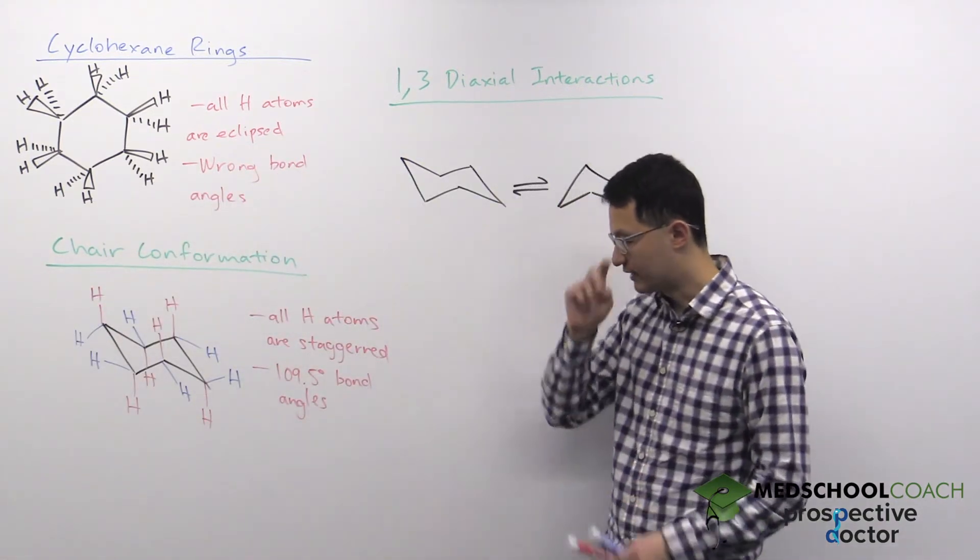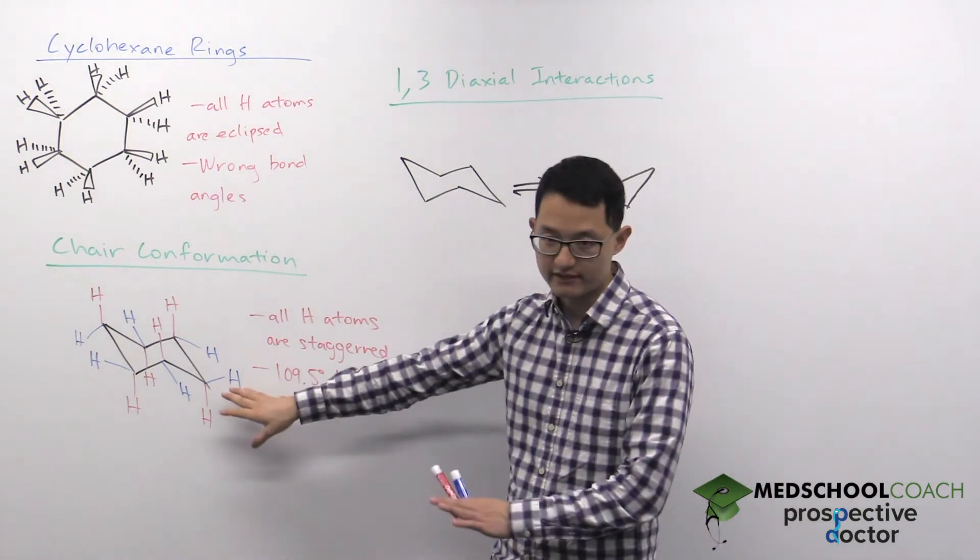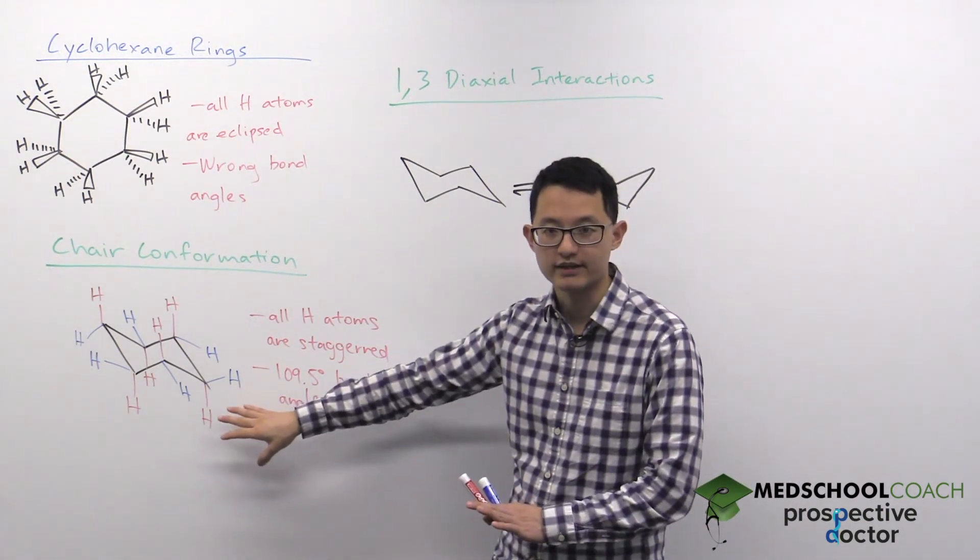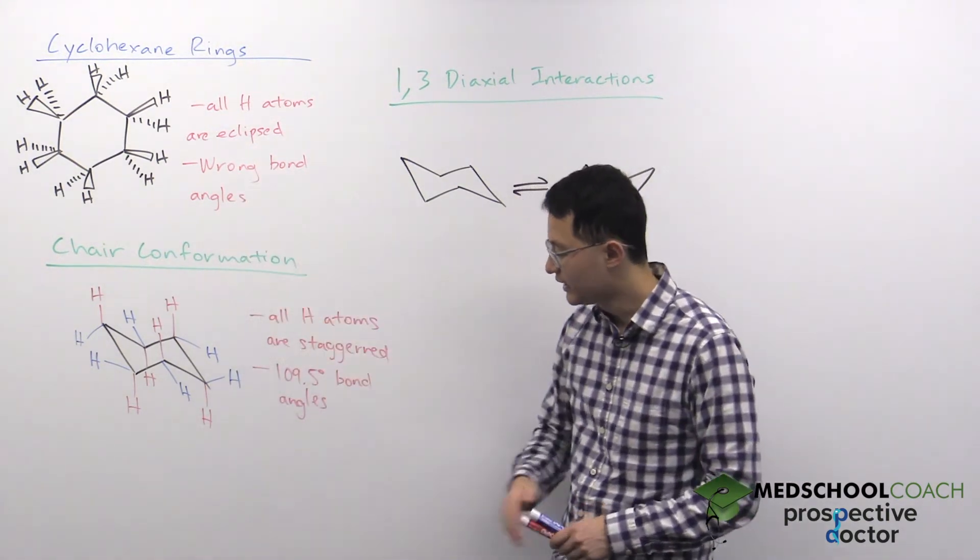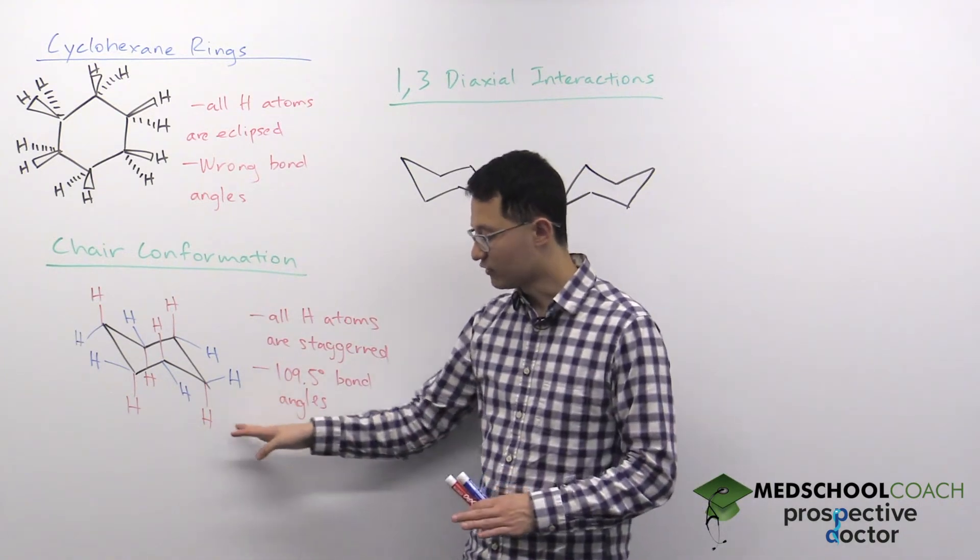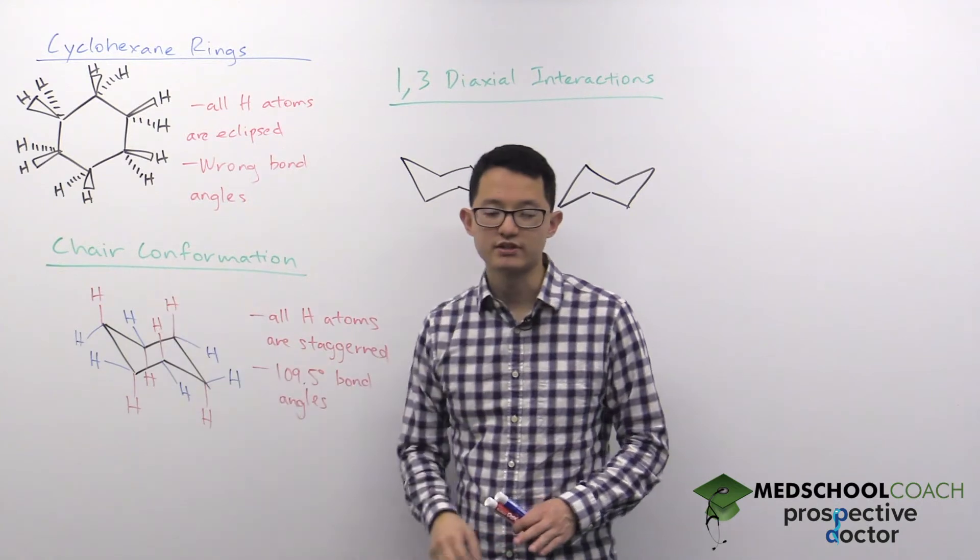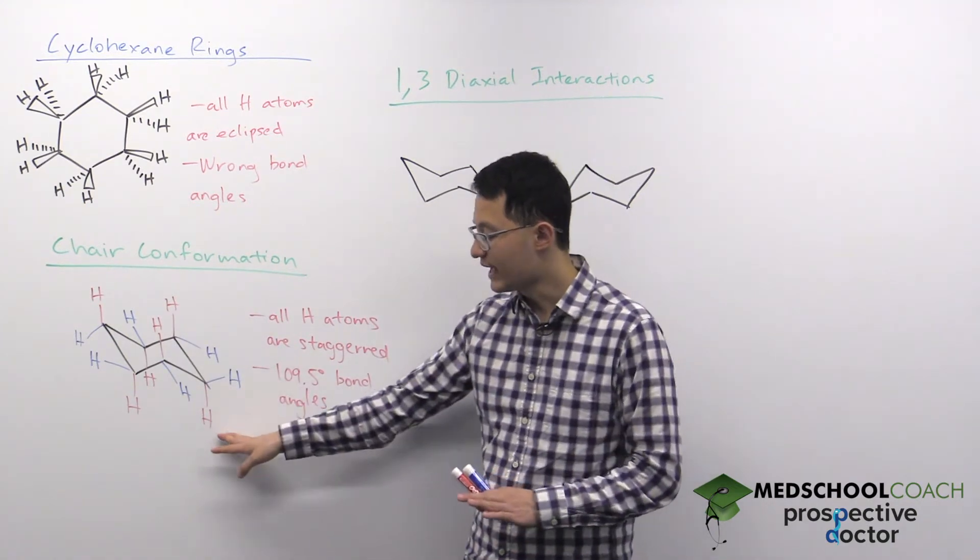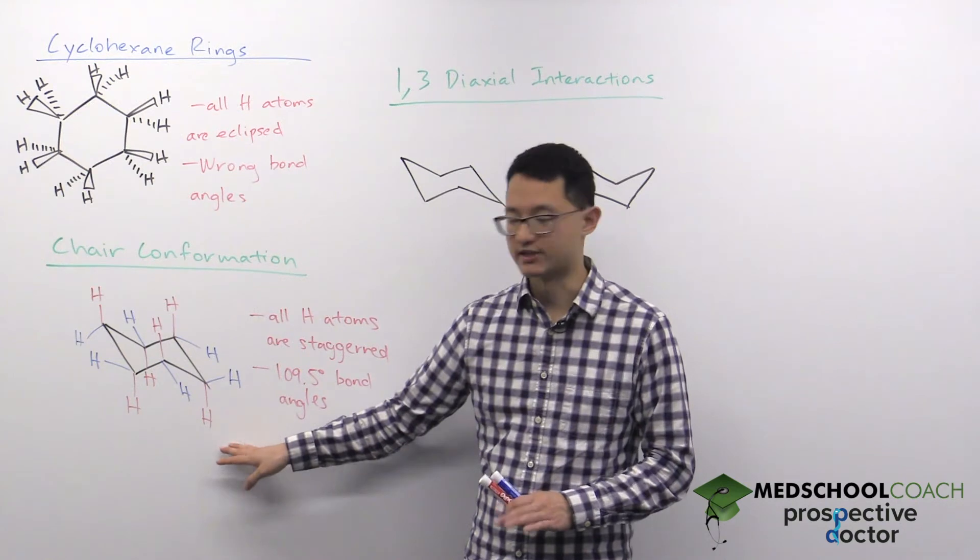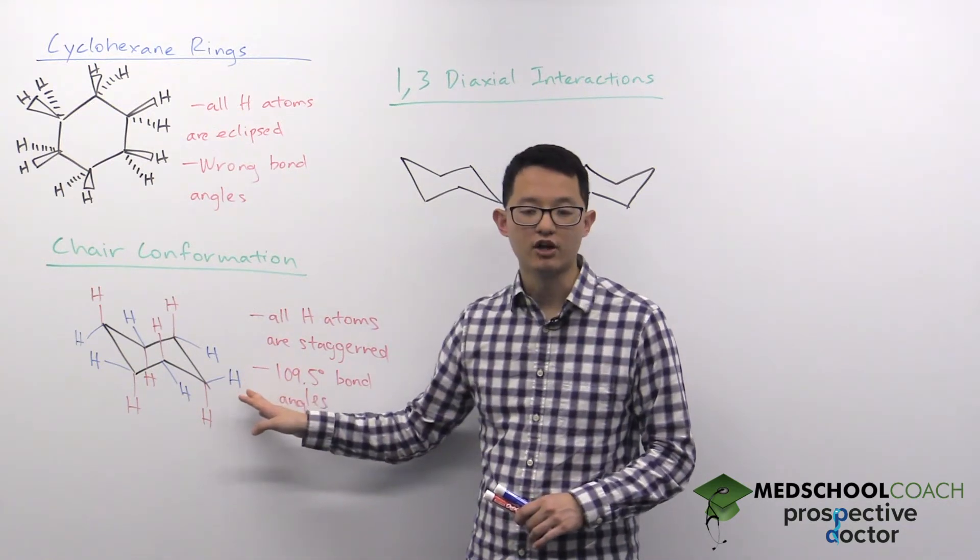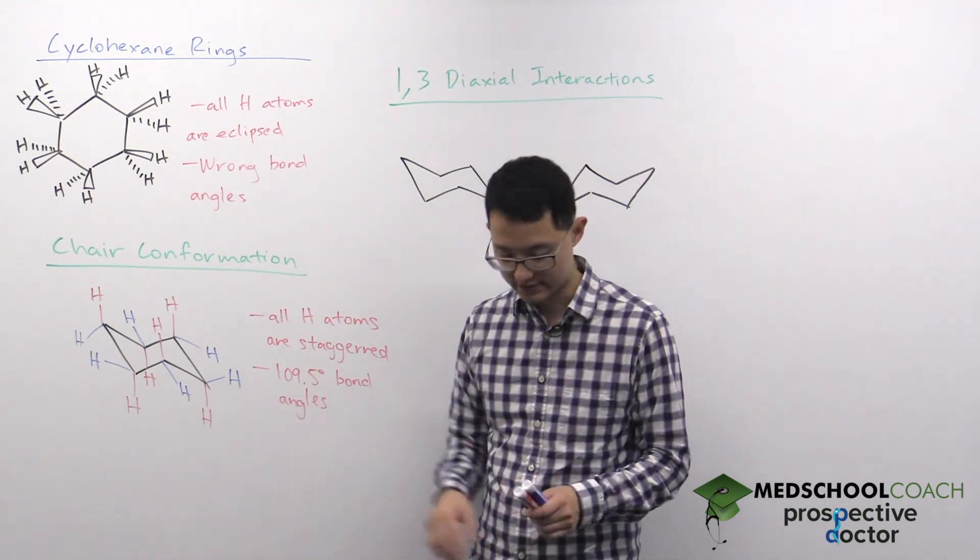Another thing I want to point out is that yes, this chair conformation looks much better than the planar shape we drew earlier, but for the MCAT you also need to be aware that these substituent orientations have two types. The ones in red are called axial positions, and the ones in blue are called equatorial positions.